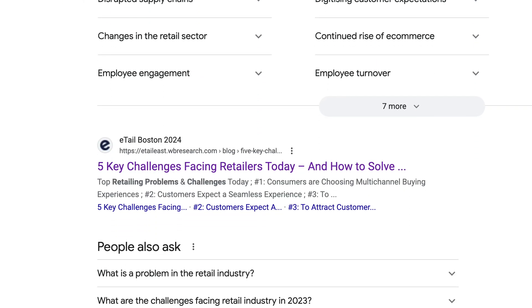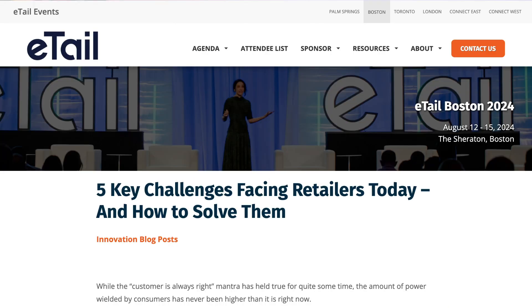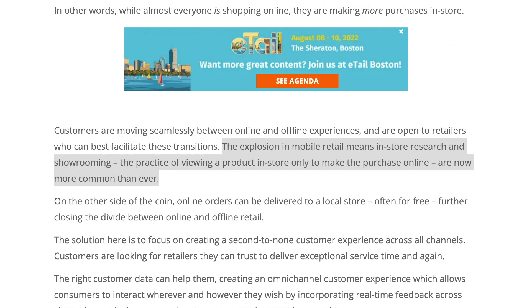So in a new tab, I searched for retail industry problems. I clicked on the first organic result, which was an innovation blog from e-tail Boston 2024. I saw that the first issue that they listed was related to multi-channel buying experiences. And I clicked on that and I read, the explosion in mobile retail means that in-store research and showrooming, the practice of viewing a product in-store only to make the purchase online, are now more common than ever. So basically shoppers have an idea of the product that they want to buy. They go and they find a retail location where they can check out this product, but then they don't buy it at that location. They go online and they buy it somewhere else. That's got to be a huge problem for retailers who are losing revenue from purchases not made in their store. They need to find a way to ensure that people come and buy in the store.